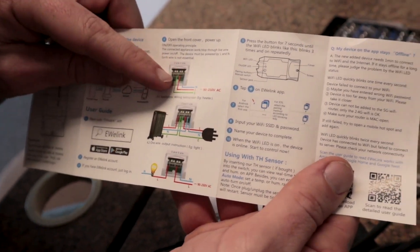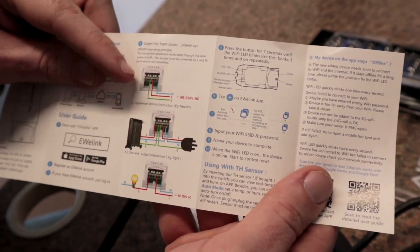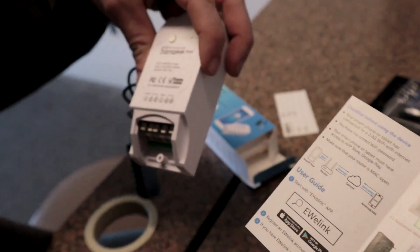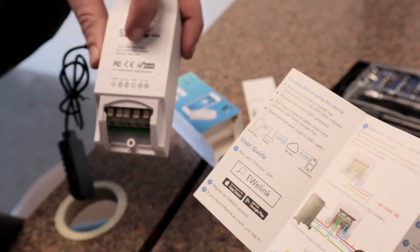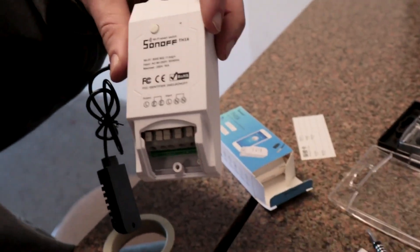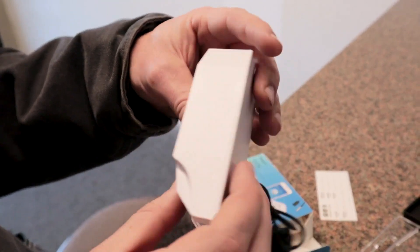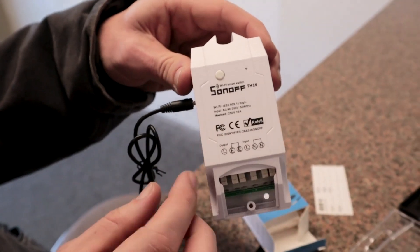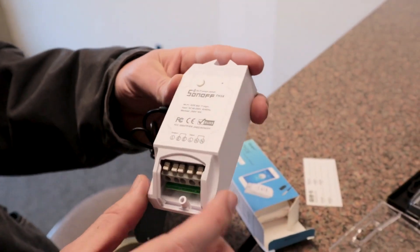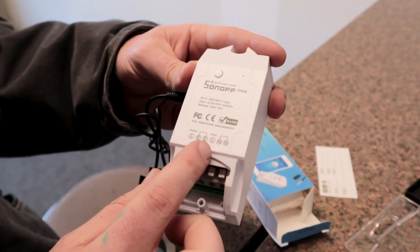L is going to be one of our hotlines or our line power. And then N is either neutral or also, I believe in this case, this will run off of 240 volts. Yeah, 250. So this will take anywhere between 90 and 250 volts to be powered. And that's just the way that we power it. There's no external power for this device.